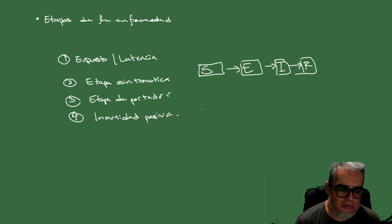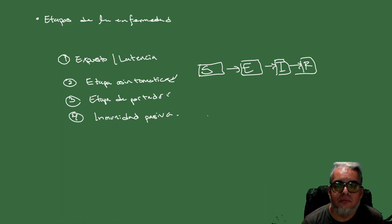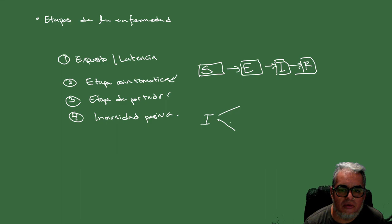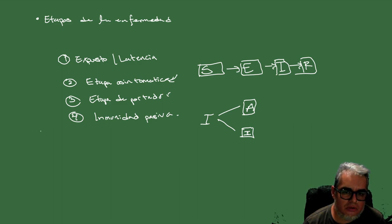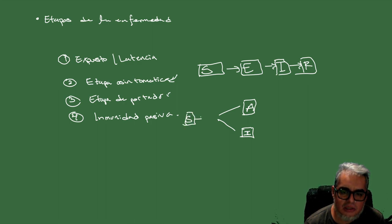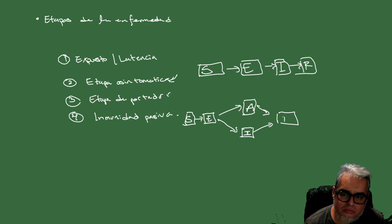Ahora podríamos tener una etapa asintomática. Es decir, nuestros infecciosos podrían estar separados en dos grupos grandes: los asintomáticos y los infecciosos con síntomas, que podríamos seguirle llamando I. Entonces, ¿cómo se modificaría este esquema? Simplemente, un individuo expuesto — tenemos los susceptibles, se exponen — y un individuo expuesto puede desarrollar o no síntomas, y cualquiera de los dos se remueve.